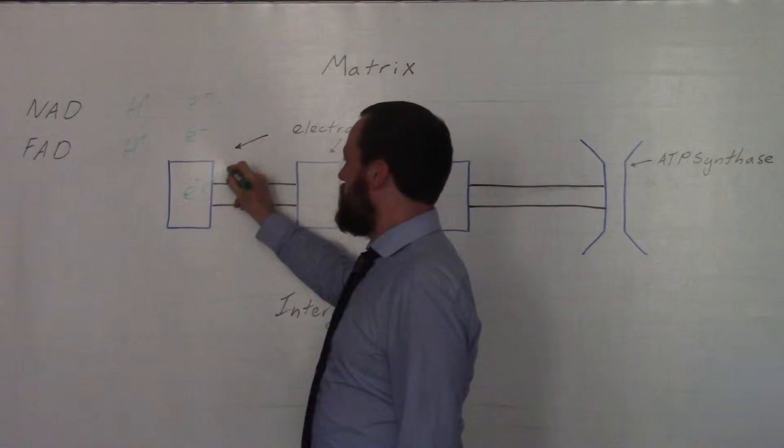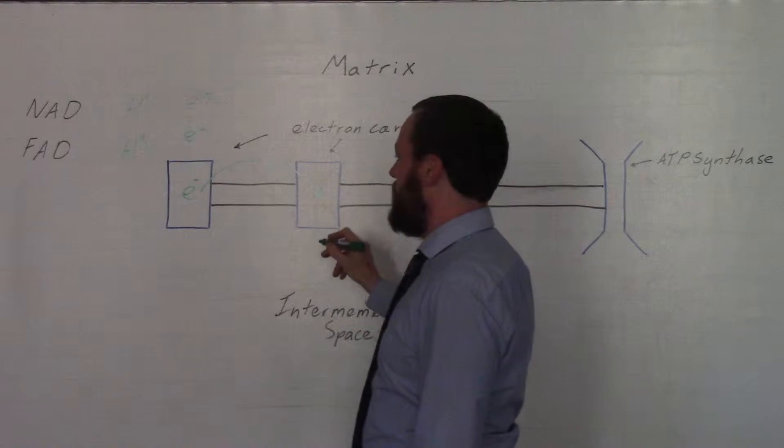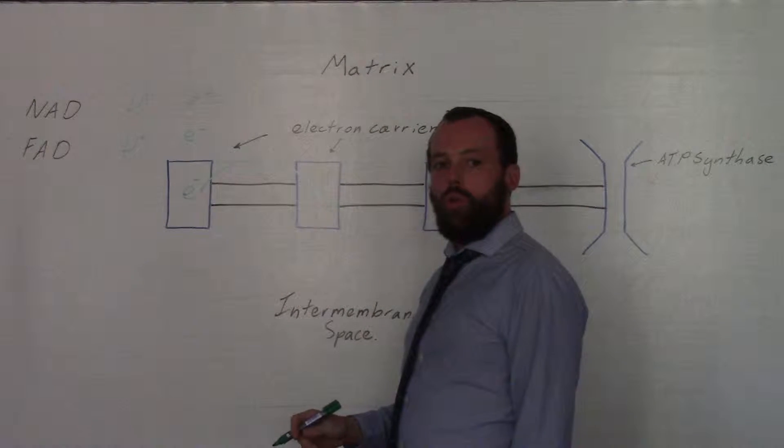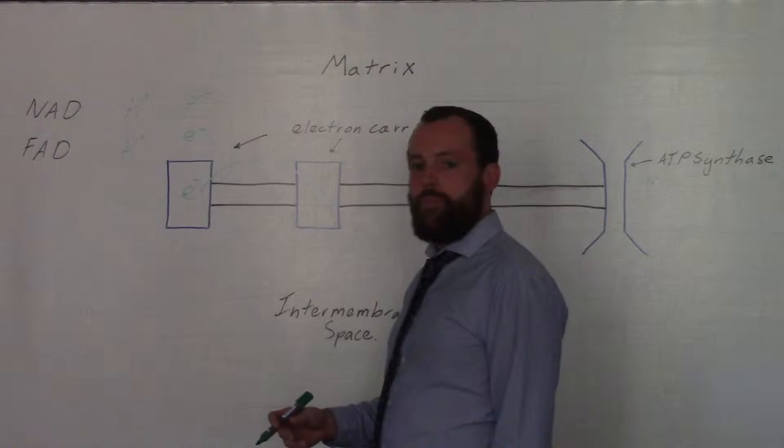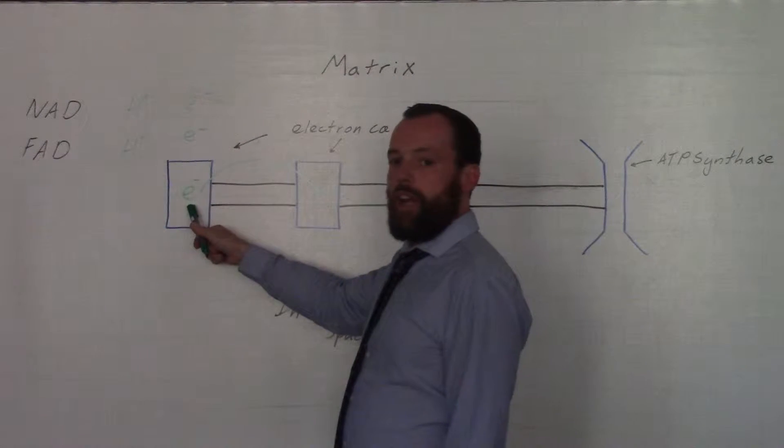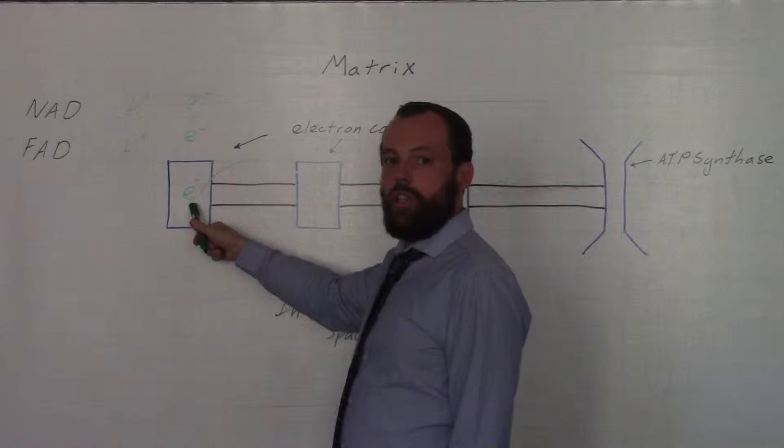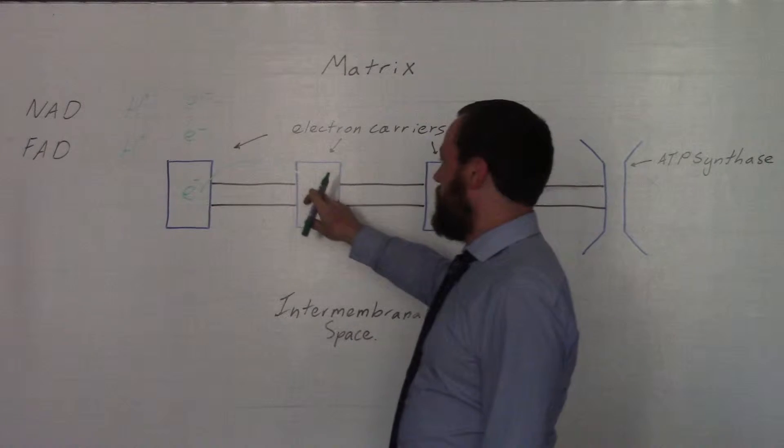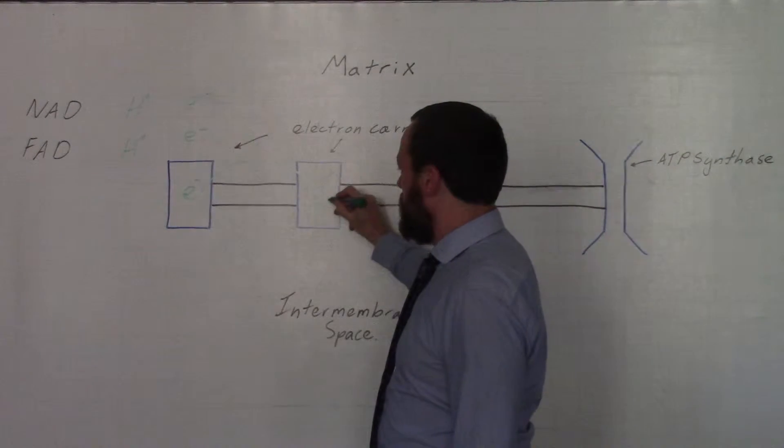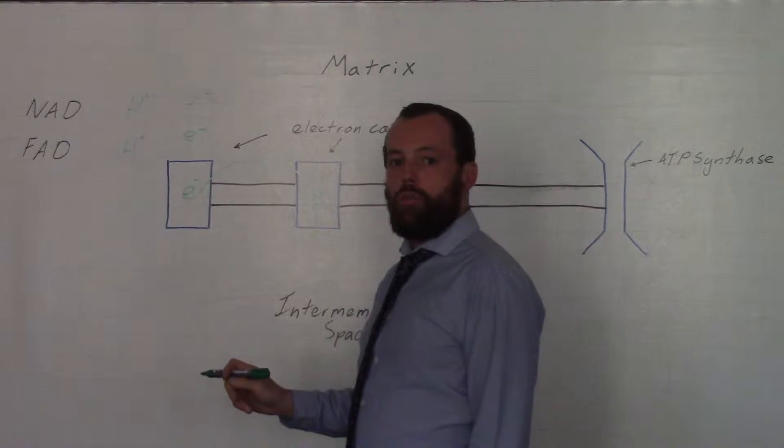The electrons move between these electron carriers in a series of what are called redox reactions—that is, reduction and oxidation. This electron carrier has been reduced; reduction is gain, it has gained an electron. As this electron moves over to the next electron carrier, we would say that the first one has been oxidized.